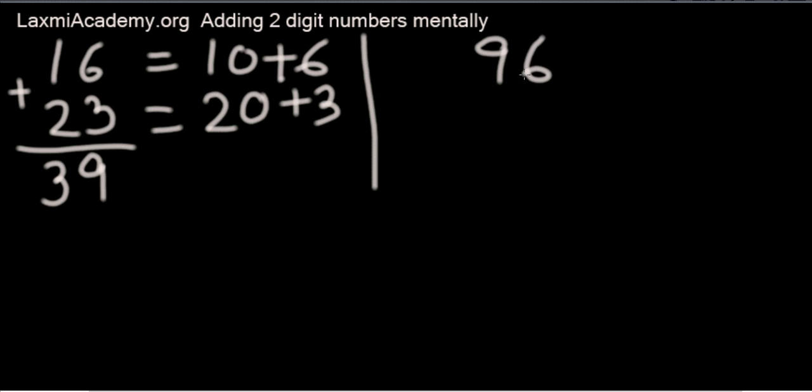Let's take some bigger numbers: 96 plus 42. So 90, 130, 136, 138. What I've done is I'm adding 90 to 40 equals 130, 136, and 138.